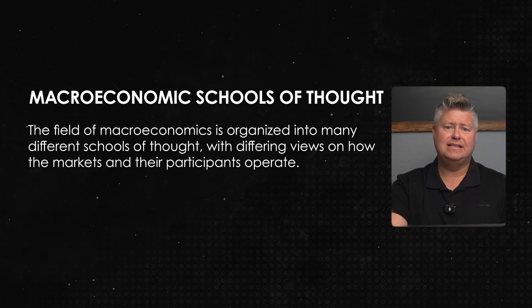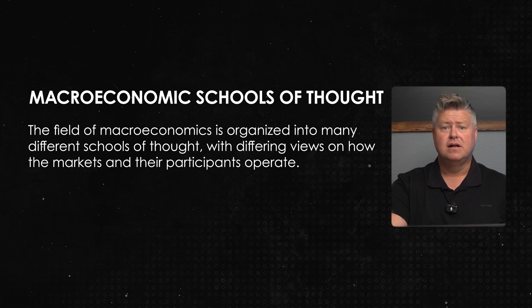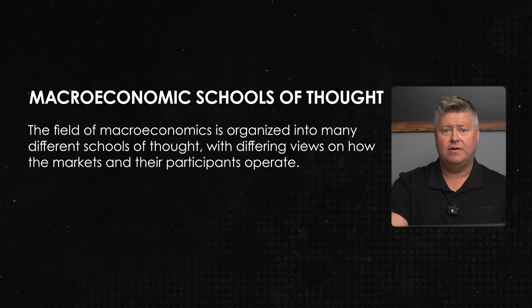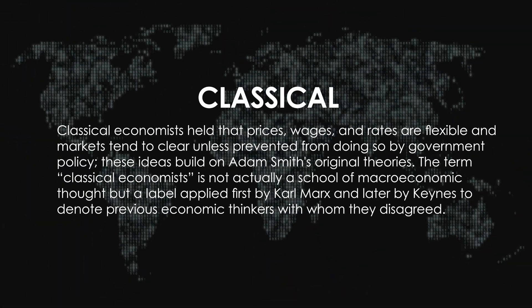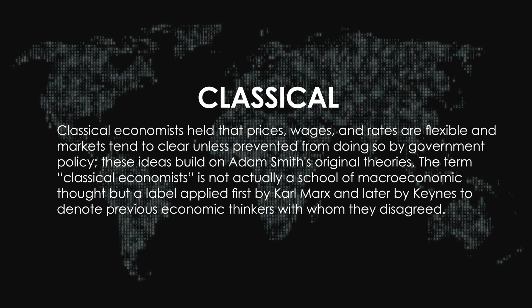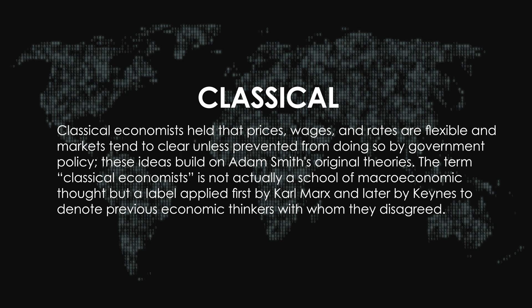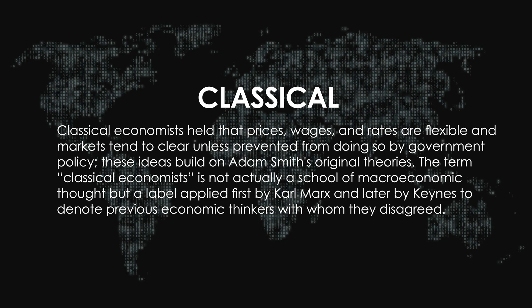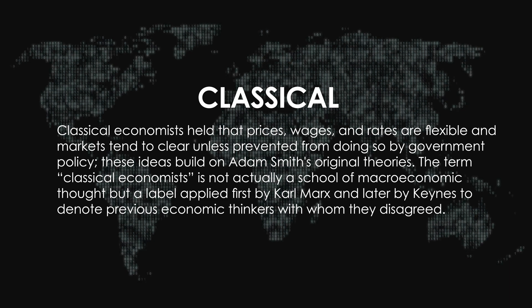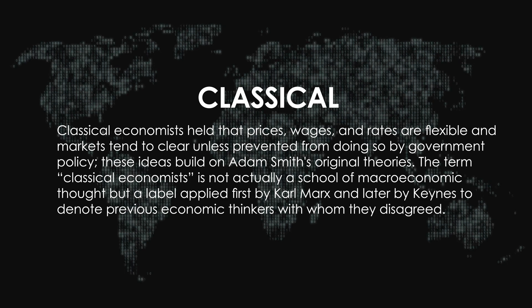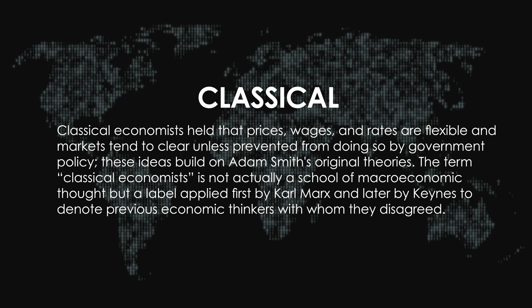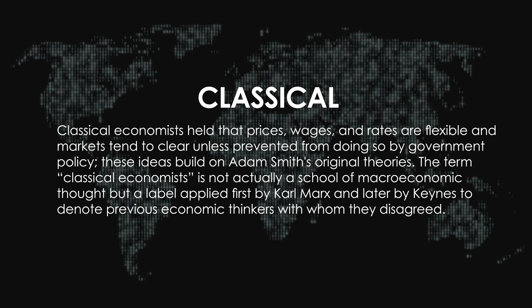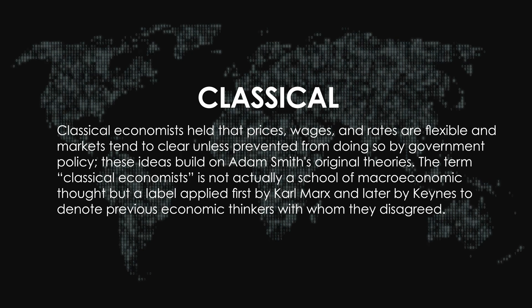The field of macroeconomics is organized into many different schools of thought with differing views on how markets and their participants operate. Classical economists held that prices, wages, and rates are flexible and the market tends to clear unless prevented by government policy. These ideas built on Adam Smith's original theories. The term 'classical economists' is actually a label applied first by Karl Marx and later by Keynes to denote previous economic thinkers with whom they disagreed.